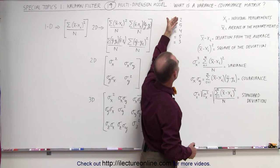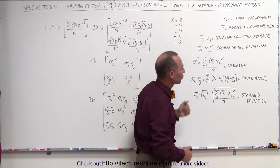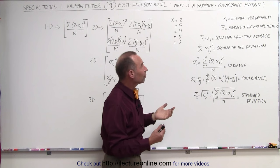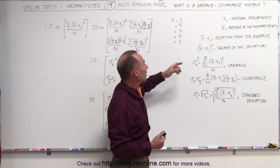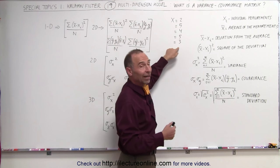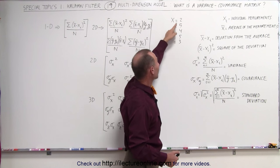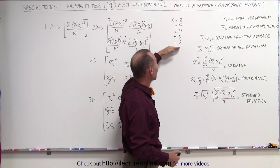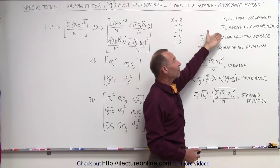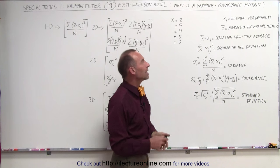So x sub i can represent 2, 5, 4, 5, and 3. The average of all these measurements would be adding them all up and dividing by the number of measurements we had. So add the 5 together, divide it by 5, and you get the average value for x. That's the mean or the average.